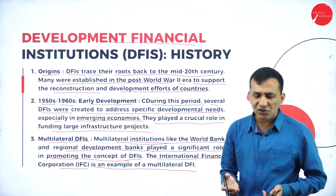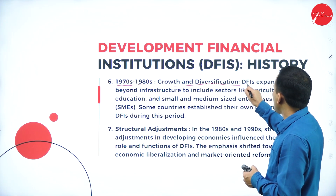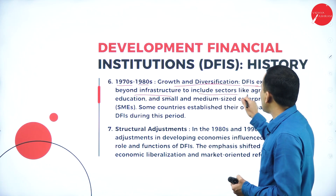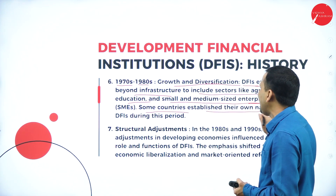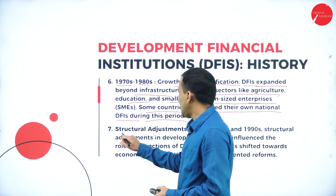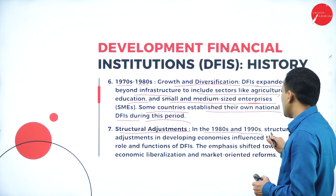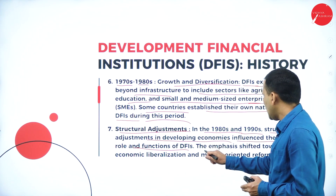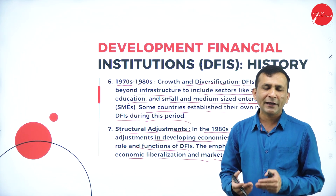In the 1970s and 1980s, there was growth and diversification — development financial institutions expanded beyond infrastructure to include sectors like agriculture, education, and small and medium-sized enterprises. Some countries established their own national development financial institutions during this period. Next is structural adjustment: in the 1980s and 1990s, structural adjustment in developing economies influenced the role and functions of DFIs. The emphasis shifted toward economic liberalization and market-oriented reforms, and the structure was redesigned.